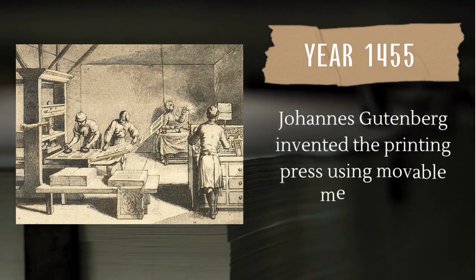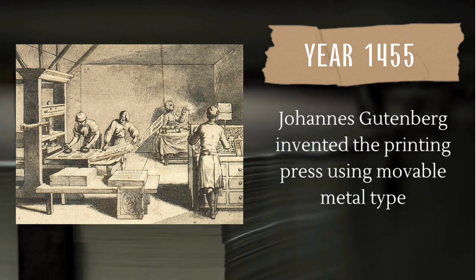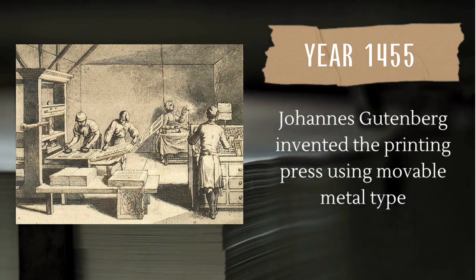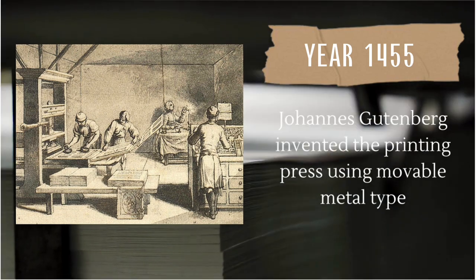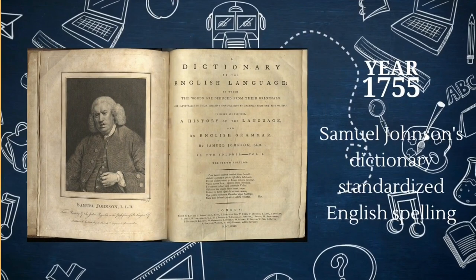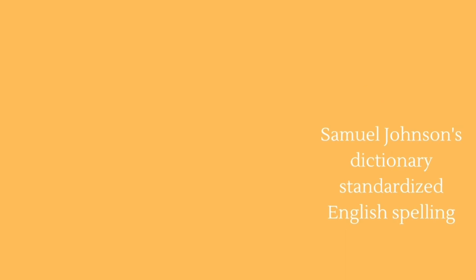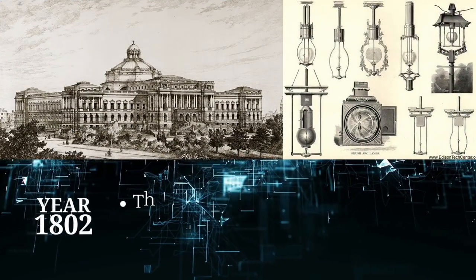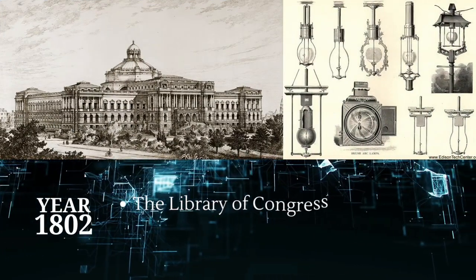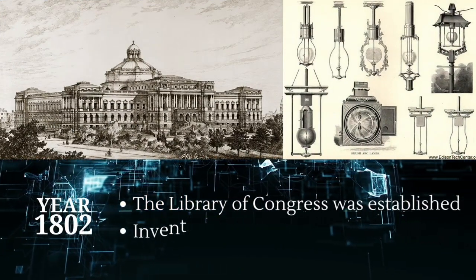In 1455, Johannes Gutenberg invented the printing press using movable metal type. In 1755, Samuel Johnson's dictionary standardized English spelling.